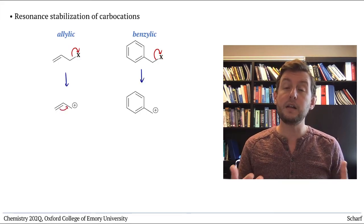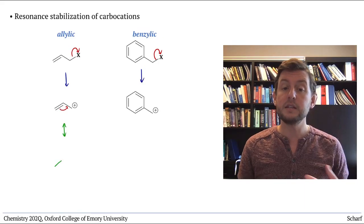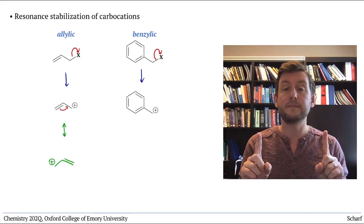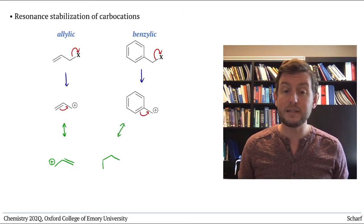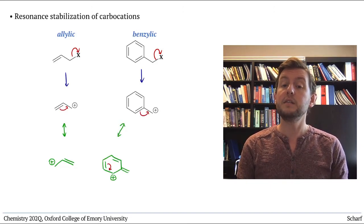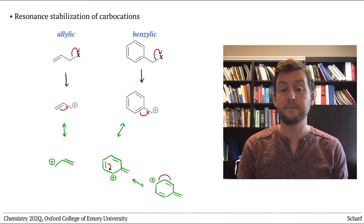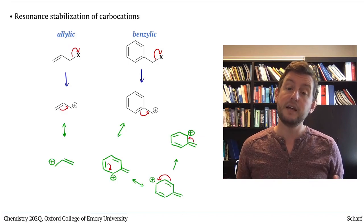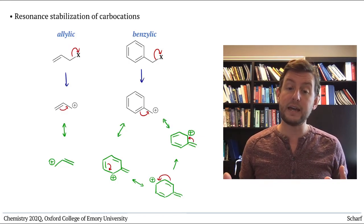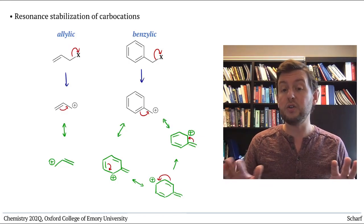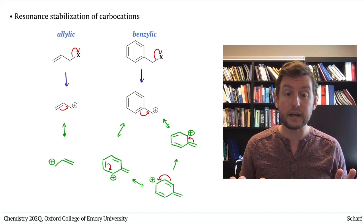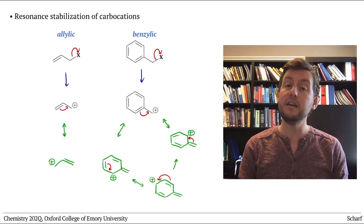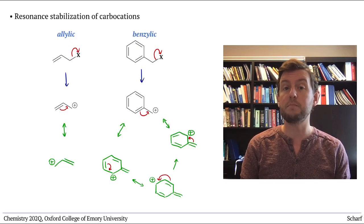In the case of allylic leaving groups, this means that the positive charge is spread over two carbons, and in the case of benzylic leaving groups, it's spread out over four carbons. This stabilization is substantial enough that primary alkyl halides, which don't normally undergo SN1 reactions, can undergo SN1 reactions if they're allylic or benzylic.